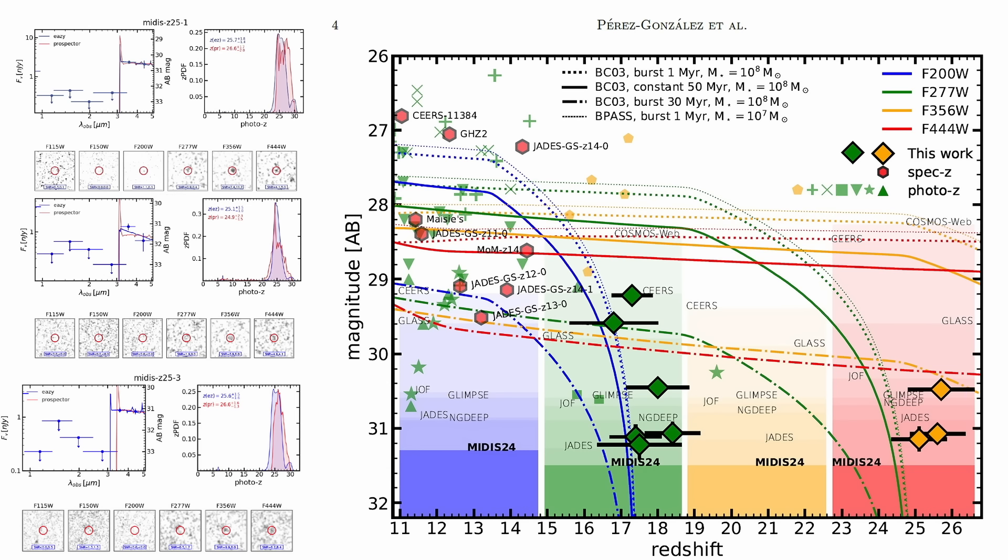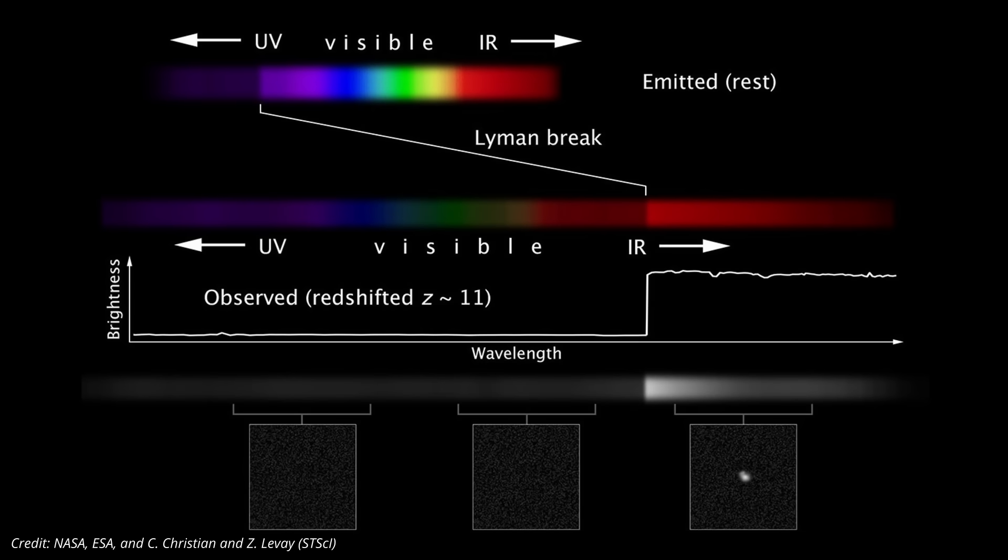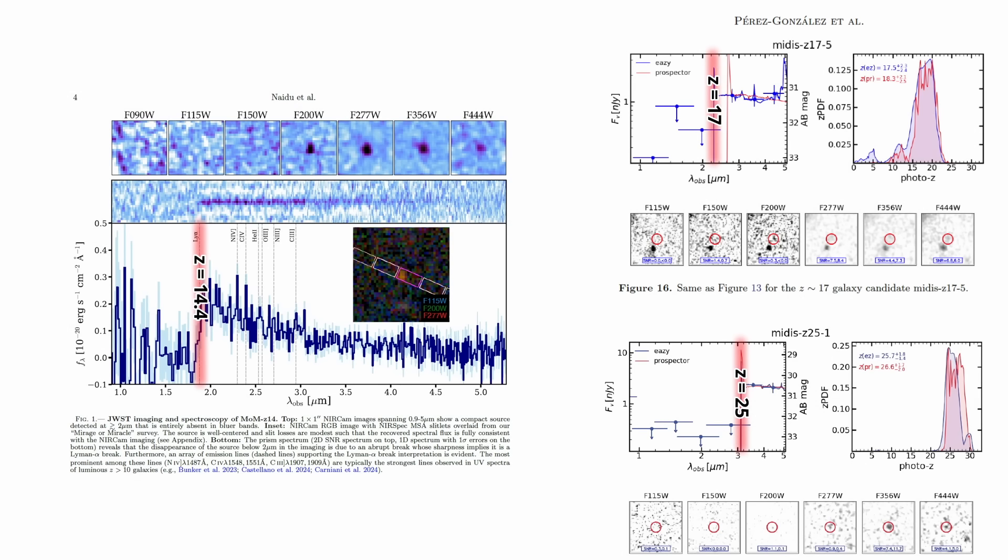So how do astronomers actually decide that these galaxies are at a redshift of 25? The key tool astronomers use at these redshifts is the Lyman break. Neutral hydrogen blocks all light bluer than 1216 angstroms, carving out a sharp cutoff in the galaxy's spectrum. The cutoff shifts redward with distance. So finding it tells us the galaxy's redshift. It's the cosmic barcode we can scan to measure distance and time.